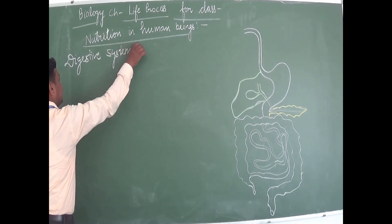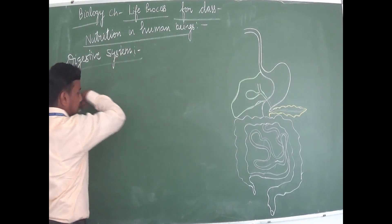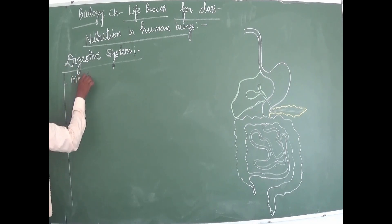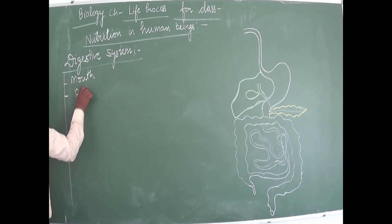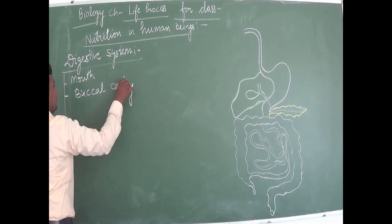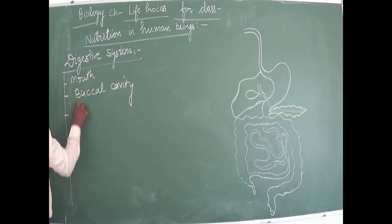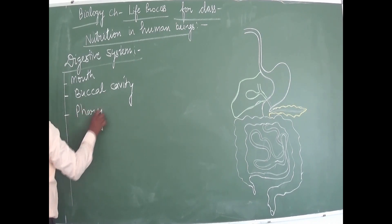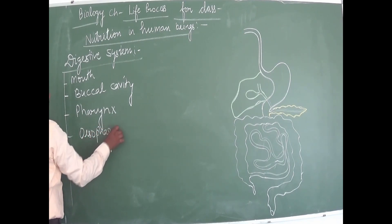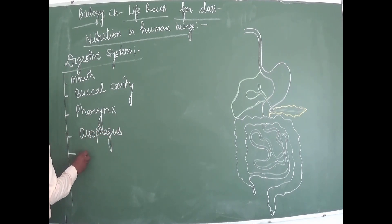The parts of the digestive system are: first is the mouth, second is the buccal cavity, then pharynx, then esophagus, then stomach.